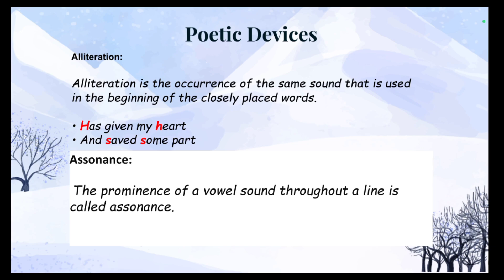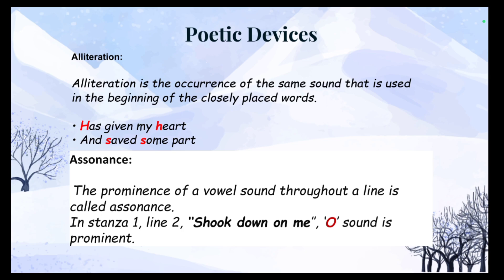The next figure of speech is assonance, where the prominence of a vowel sound is seen throughout a line. In this poem, we have the second line in stanza 1, 'shook down on me,' where the 'o' sound is very prominent — and 'o,' as we know, is a vowel sound.